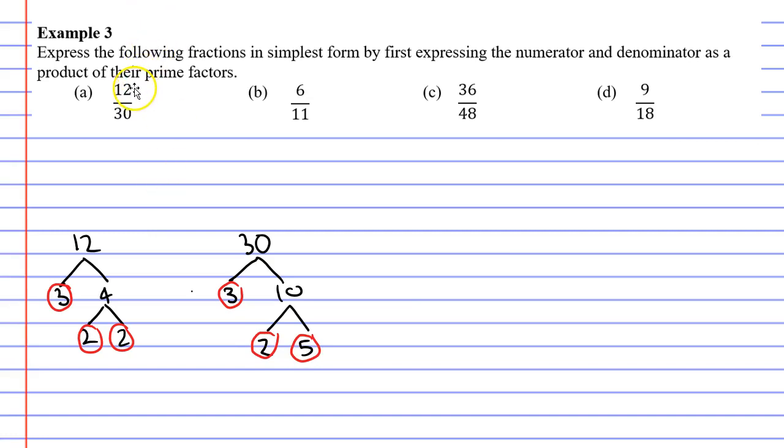So looking back at our fraction of 12 over 30, what are the prime factors of 12? Well they are 3, 2 and 2. So we're going to rewrite 12 as 2 times 2 times 3. I've just taken the prime factors and written them down in numerical order. Let's do the same for 30. We've got the factors of 3, 2 and 5. In numerical order this would be 2 times 3 times 5.